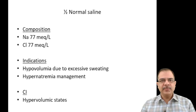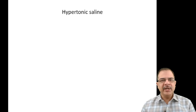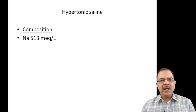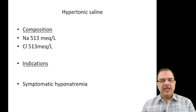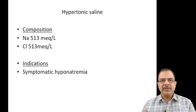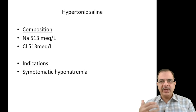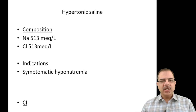Hypertonic saline has a sodium and chloride concentration of 513 mEq/L. It is indicated for symptomatic hyponatremia, where we want to give more sodium relative to water. Contraindication is hypervolemic states.